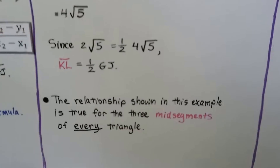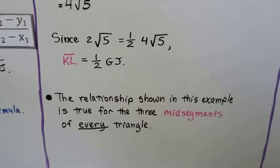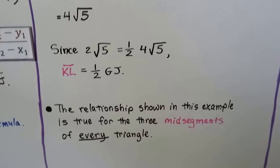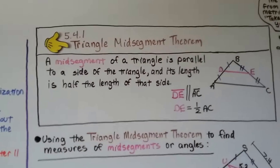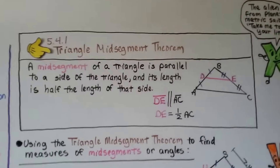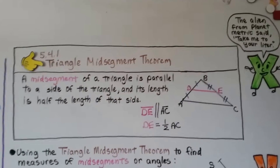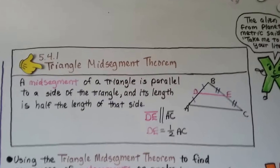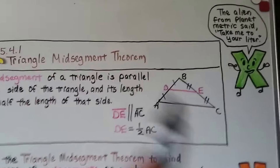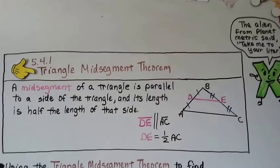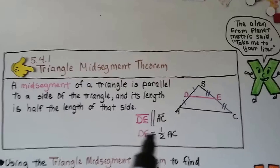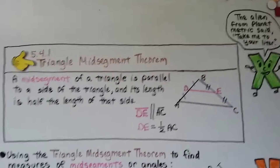The relationship shown in this example is true for the three mid-segments of every triangle. Here's the Triangle Mid-Segment Theorem: a mid-segment of a triangle is parallel to a side of the triangle, and its length is half the length of that side. So DE is parallel to AC, and DE is half of AC.